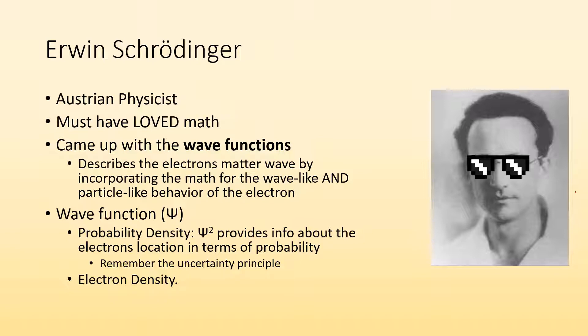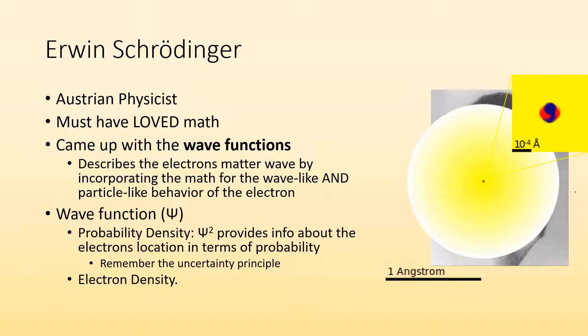So we introduced this concept of an electron density. Where are you likely to find electrons? And that's kind of what you're seeing in this image where it's yellow. Where it's more yellow, that's a higher electron density. That's where you're more likely to find those electrons.